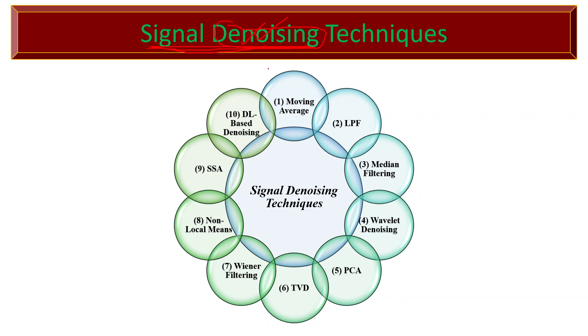Signal denoising refers to a set of methods and algorithms used to remove or reduce unwanted noise while preserving desired signal components. Noise can be introduced during signal acquisition, transmission, or processing. The goal is to enhance the signal-to-noise ratio and improve the clarity and reliability of the signal.